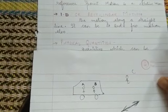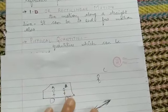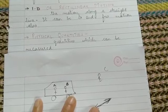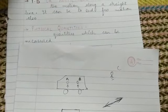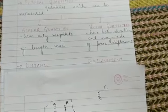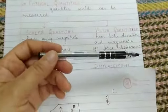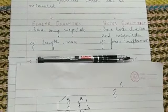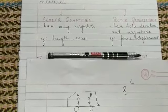The next topic is physical quantities. What is the meaning of physical quantity? The quantities which can be measured are called the physical quantities. There are two types of physical quantities: scalar quantities and vector quantities. For example, if I take this pen, can you measure the length of this pen? Yes, we can measure the length of this pen. Suppose it comes out to be 10 cm. Then we will say the length of this pen is 10 cm. So length is a physical quantity because it can be measured.